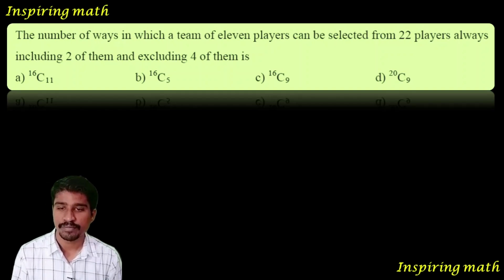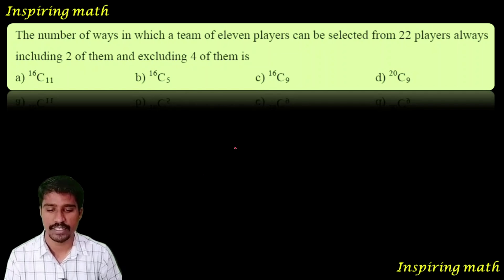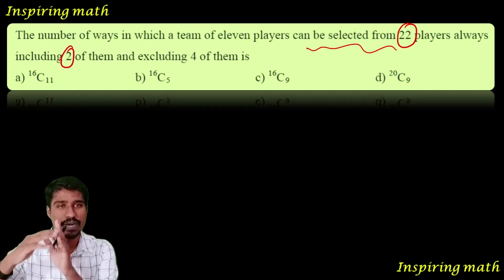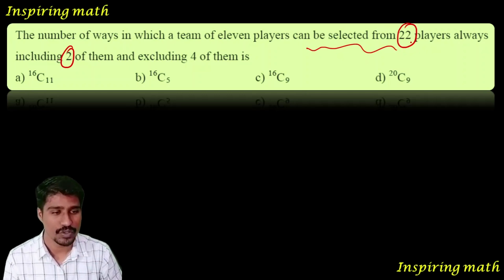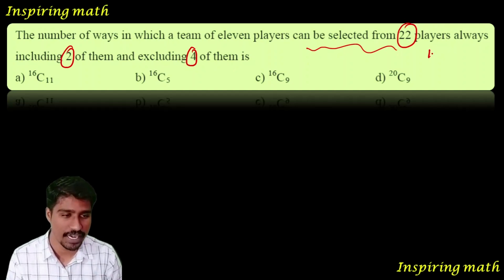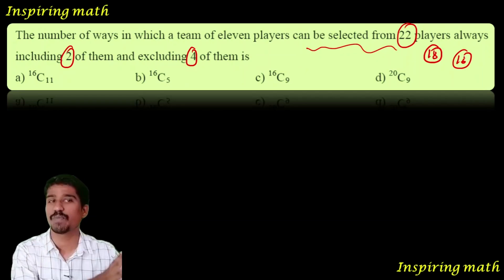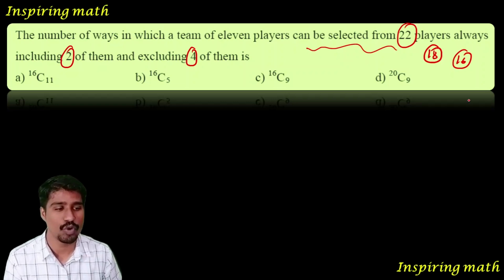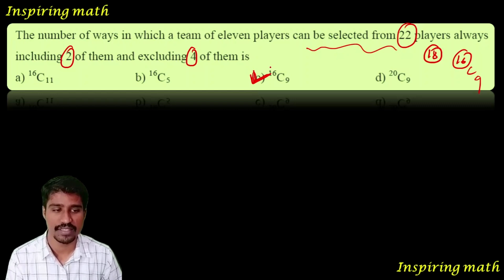The number of ways in which a team of 11 players can be selected from 22 players, always including 2 of them. 2 are already fixed, so 11 minus 2 equals 9 members selected from remaining 20. It can be done in 20C9. Wait, that's 16C9. Option C is your answer.